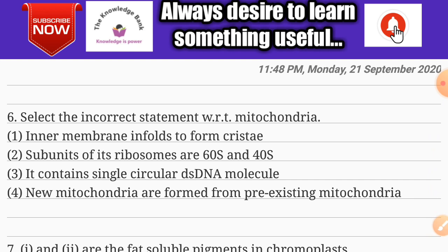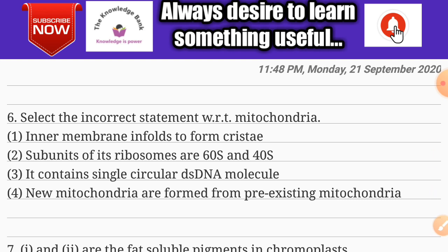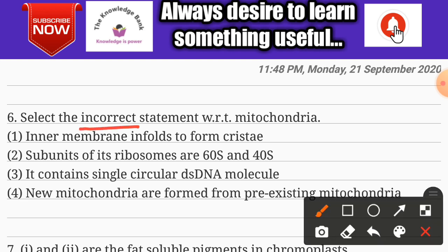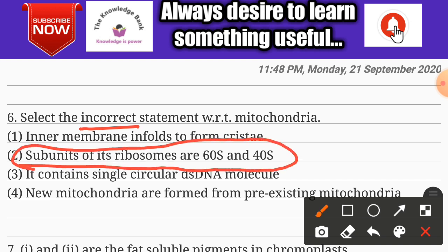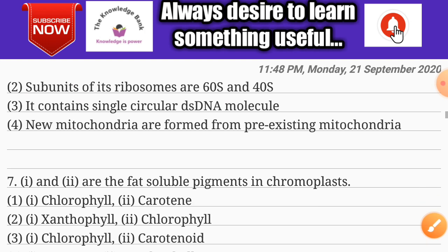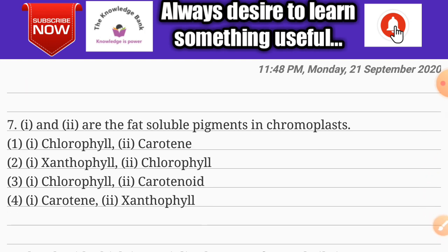Question number six: select the incorrect statement regarding mitochondria. Options are: inner membrane infolds to form cristae; subunits of its ribosomes are 60S and 40S; it contains a single circular dsDNA molecule; new mitochondria are formed from pre-existing mitochondria. The correct answer (incorrect statement) is option two: subunits of its ribosomes are 60S and 40S.